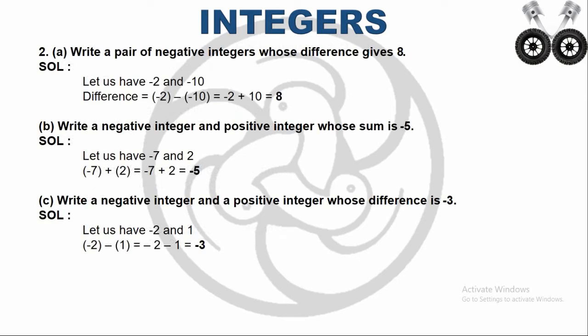The second question: write a pair of negative integers whose difference equals 8. Both integers must be negative, and when subtracted the answer should be 8. I take the integers as -2 and -10: minus 2 minus minus 10. Since 2 operators are together, I change the sign — minus times minus becomes plus — giving minus 2 plus 10. The 2 integers have different signs, and the biggest number has a positive sign, so the answer is +8.